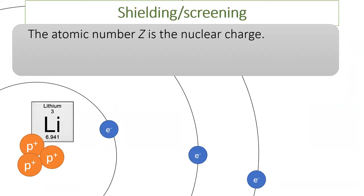This process affects the chemistry of the elements, as we shall see with lithium. Lithium has the atomic number 3, meaning it has 3 protons in its nucleus. Lithium also has 3 electrons in orbitals around the nucleus. We will see that each electron feels a different effective nuclear charge, abbreviated Z sub eff.